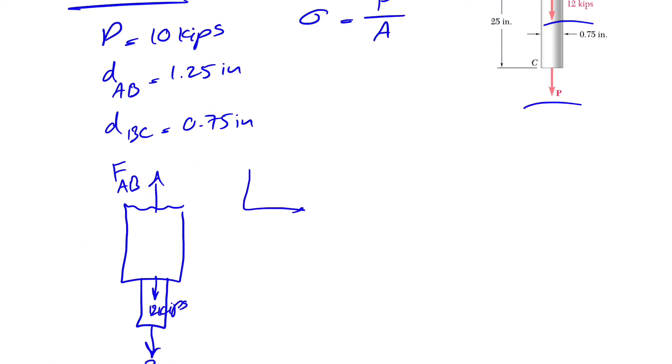So let's call this our X and Y. Obviously, we only are in Y direction. If we do sum of all forces in Y direction, we have F_AB minus 12 minus P which is 10 equals 0 and that shows our F_AB is 22 kips.